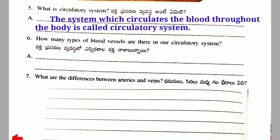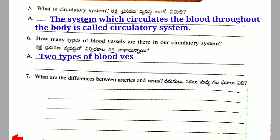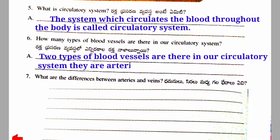Sixth question: How many types of blood vessels are there in our circulatory system? Answer: Two types of blood vessels are there in our circulatory system. They are arteries and veins.